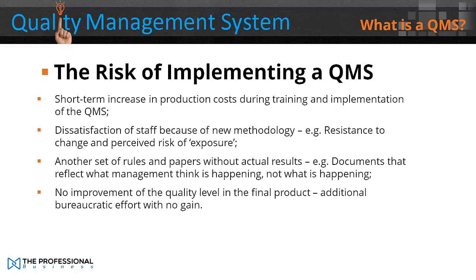The risks of implementing a QMS include a short-term increase in production costs during training and implementation, staff dissatisfaction due to a new methodology such as resistance to change and perceived risk of exposure, the creation of rules and paperwork without actual results — for example, documents that reflect what management think is happening rather than what is actually happening — no improvement in the quality level of the final product, and additional bureaucratic effort with no gain.